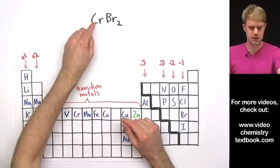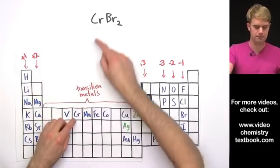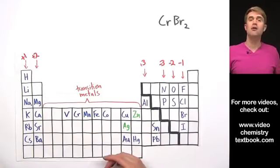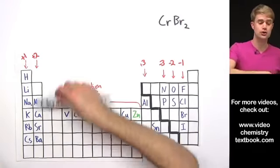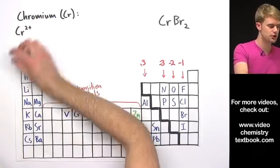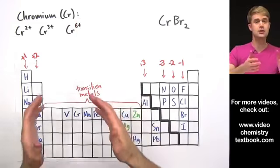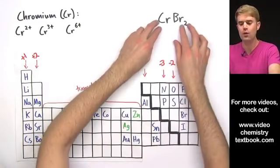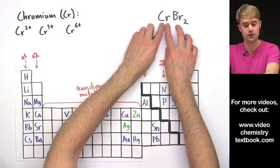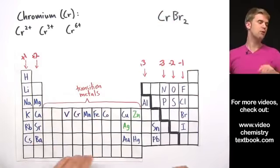Here's our first example: CrBr₂. Cr here is chromium — it's a transition metal. Like many transition metals, chromium can make a variety of ions with different charges. Chromium can make three ions: Cr²⁺, Cr³⁺, and Cr⁶⁺. So when we name this compound, we have to figure out what charge chromium has here — it could be 2+, 3+, or 6+.